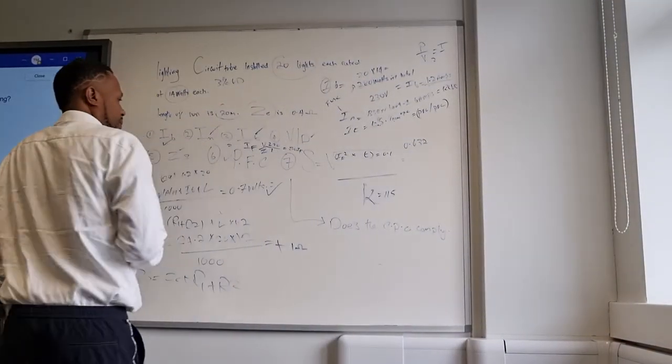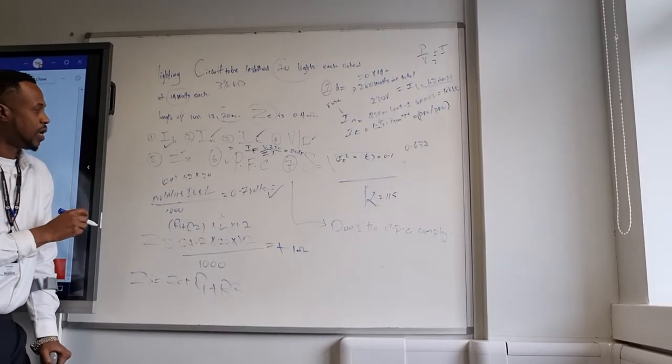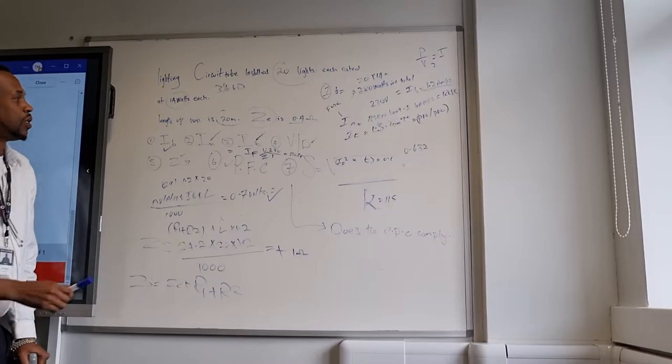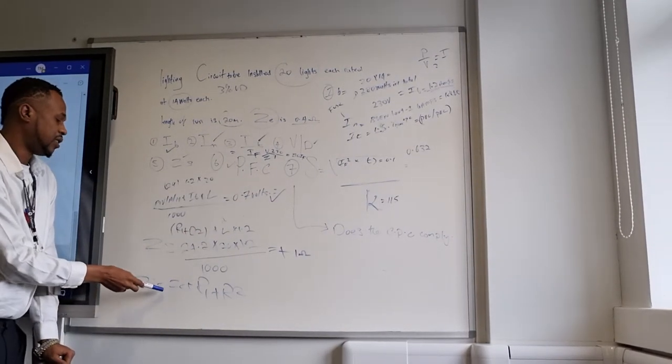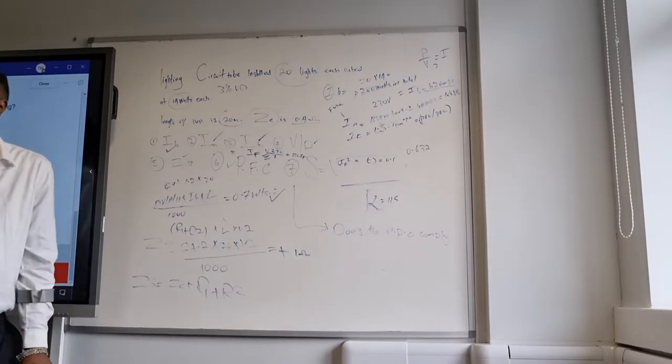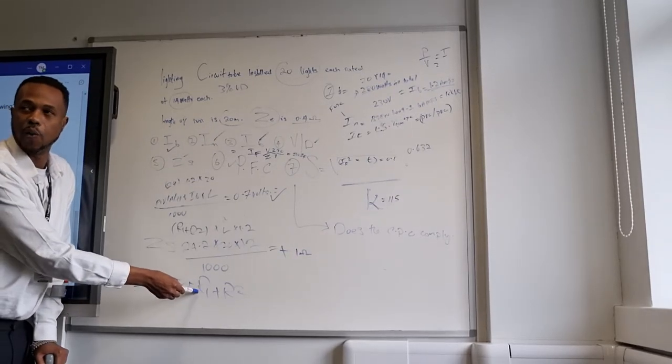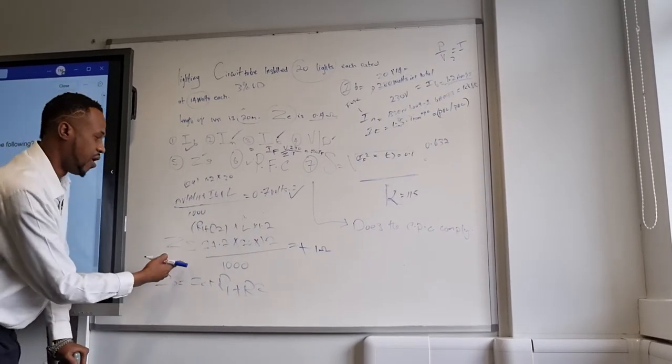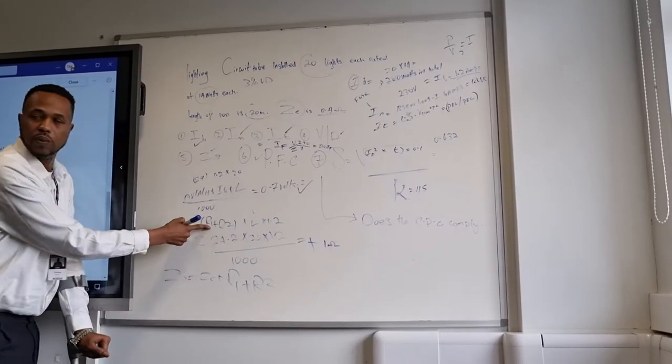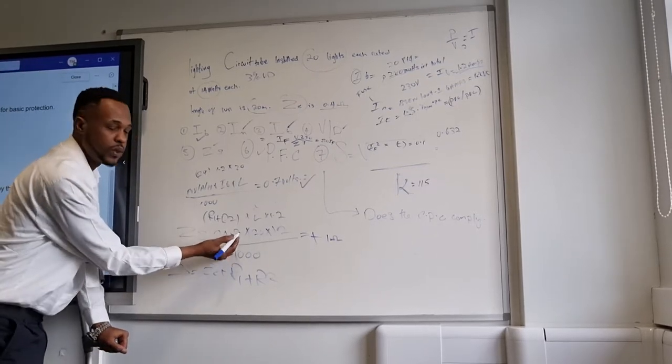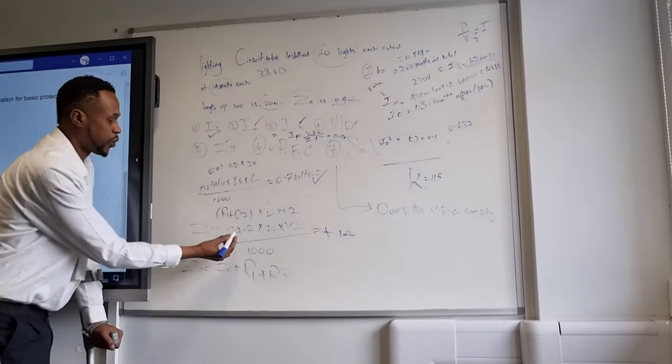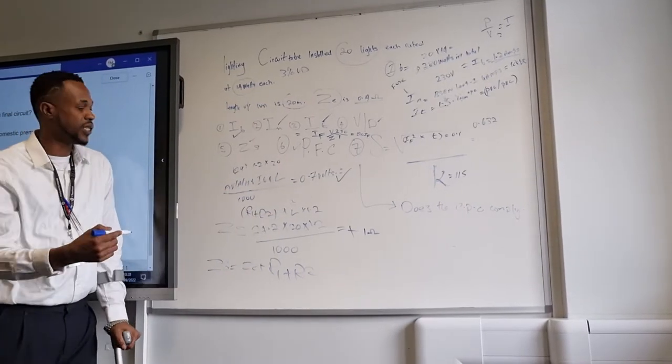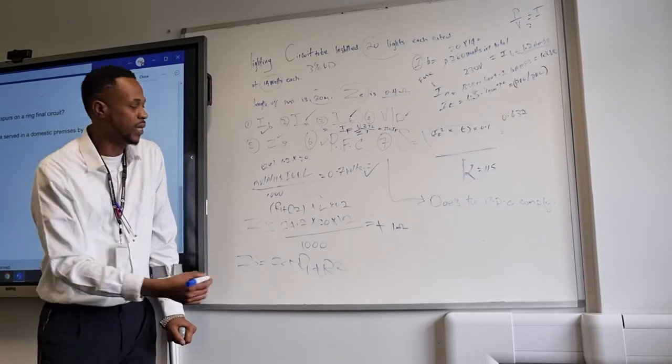The next one I gave you was the Zs. To work out the Zs, I gave you the value for Ze, which was 0.4 ohms. To calculate the value for Zs, remember Zs equals Ze plus R1 plus R2. So by me giving you this formula for Ze, which is 0.4, all you had to do was do this formula now. Because the CPC is incorporating the cable, you have to put a multiplier, and that multiplier is 1.2.